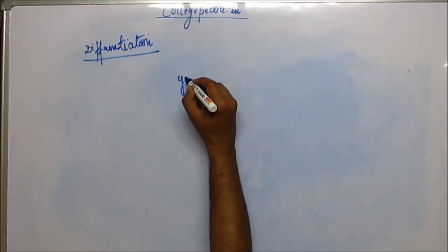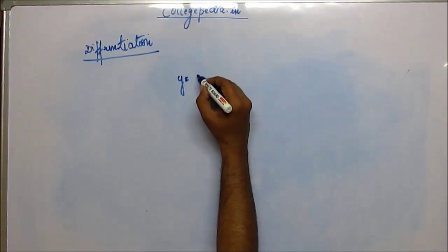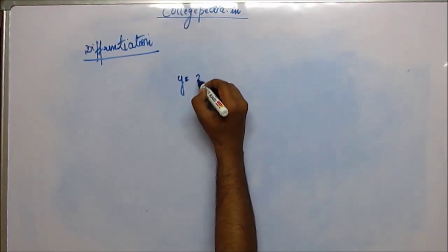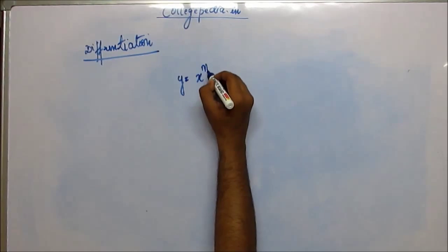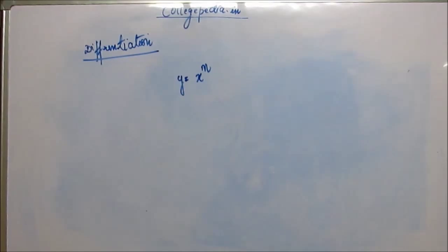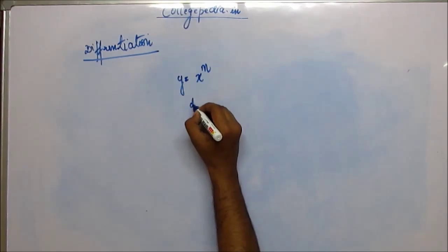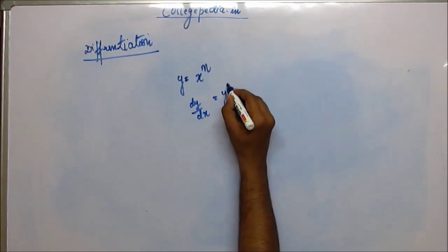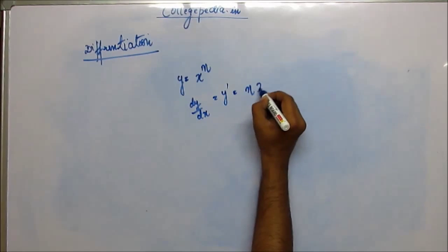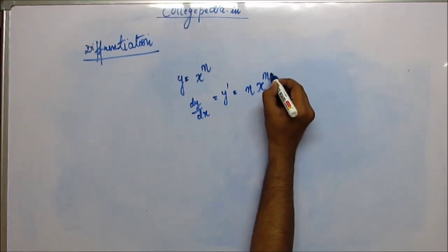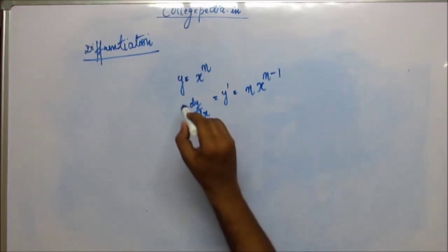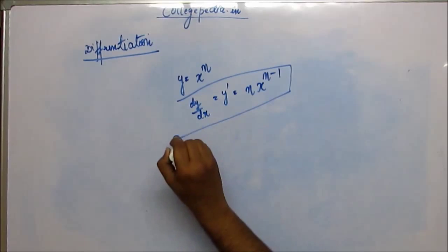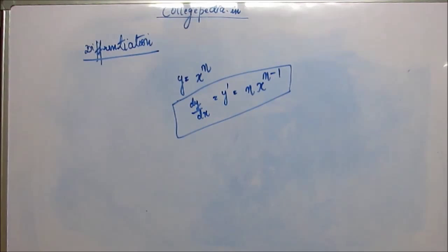If y is a function of x that can be written as y = x^n, where n is any real number, then dy/dx or y' would be n times x^(n-1). This is a very important formula that you have to know to begin kinematics. dy/dx = n·x^(n-1).